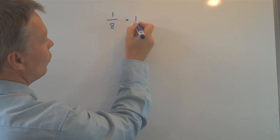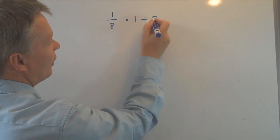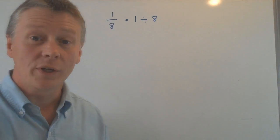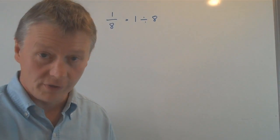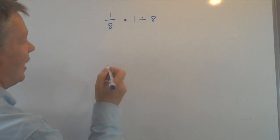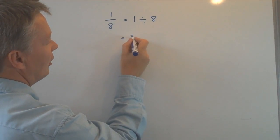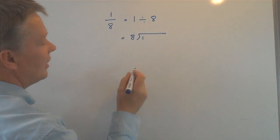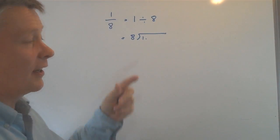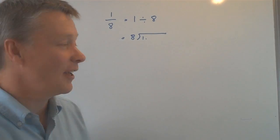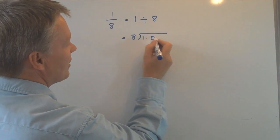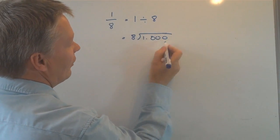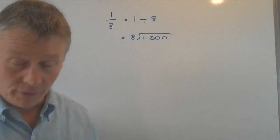is exactly the same as writing one divided by eight. Which is the same as using short division in order to calculate how many lots of eight there are in one. However, I know that there aren't any lots of eight in one, so therefore I'm going to put a couple of decimal places there in order to help me with my calculation.